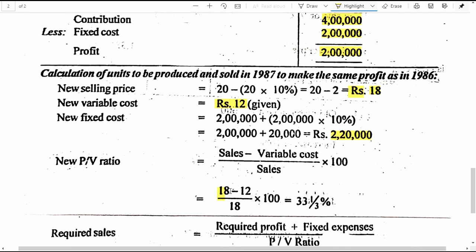New selling price 18 rupees minus new variable cost per unit 12 rupees, divided by new selling price 18 rupees, into 100 — that gives us 33 and 1/3%, or 33.333%. This is the profit volume ratio of this business for the next year 1987.